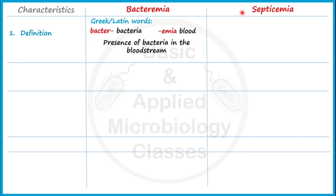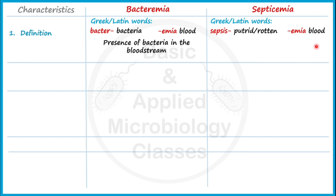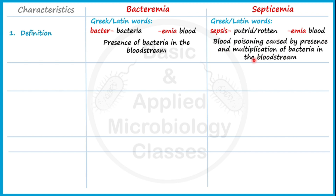Septicemia has also originated from Greek and Latin words — 'sepsis' and 'emia'. Sepsis means putrid or rotten, and emia means blood, so it means rotten or putrid blood. That's why Septicemia is defined as a kind of blood poisoning caused by the presence and multiplication of bacteria in the bloodstream. Simply put, just the presence of bacteria in the bloodstream is Bacteremia, while presence along with multiplication resulting in blood poisoning is Septicemia.